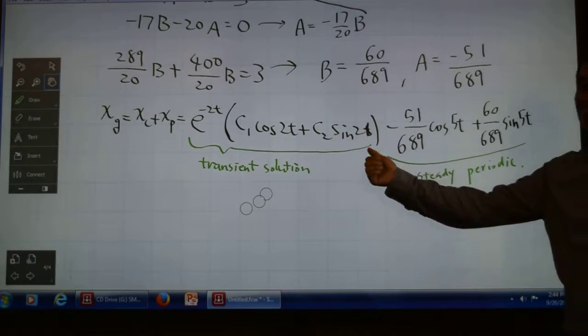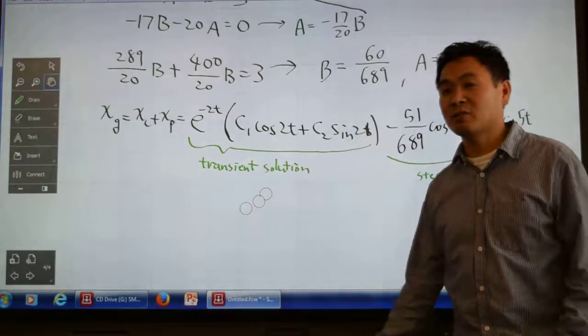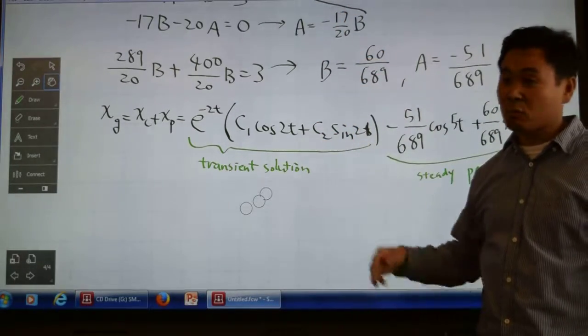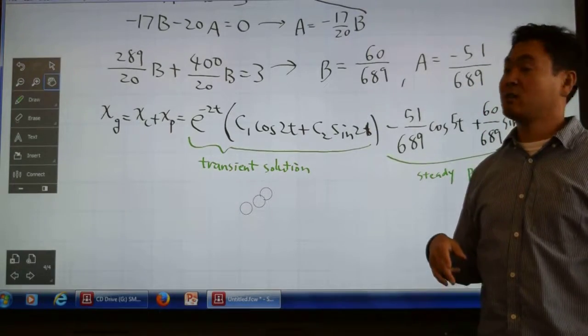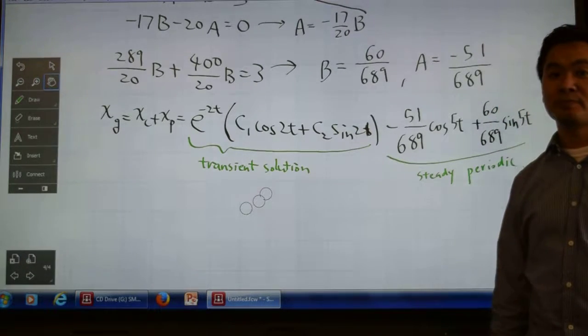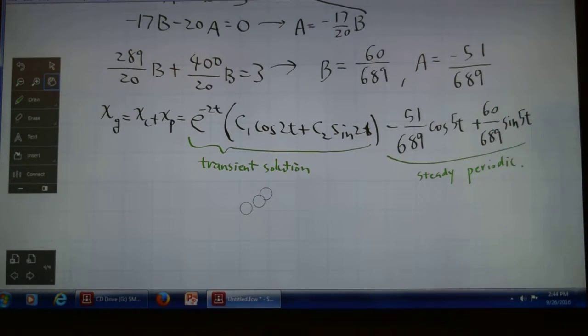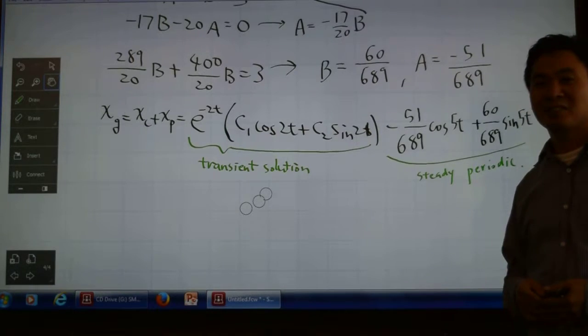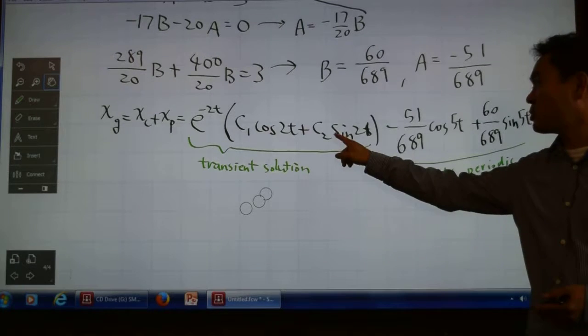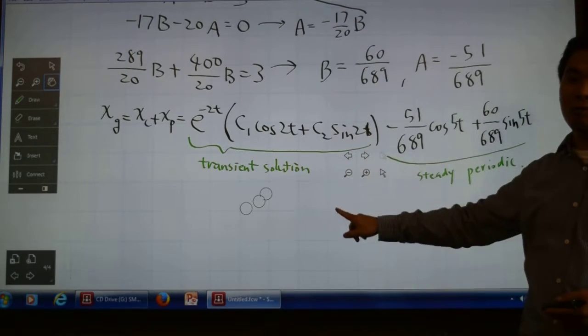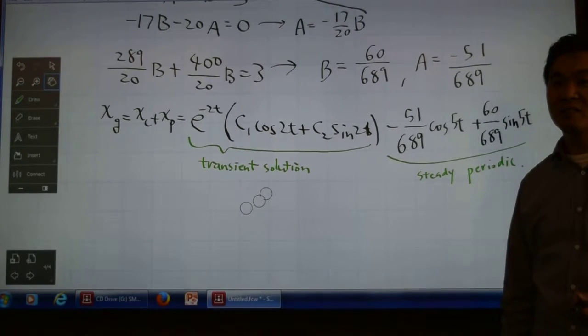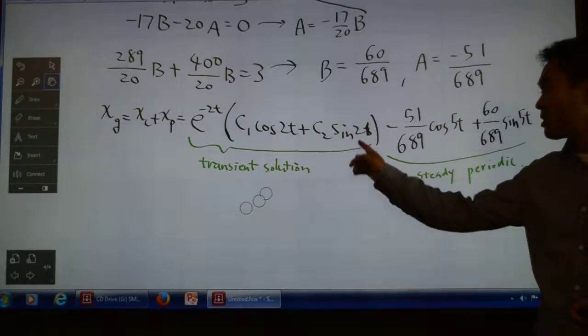Let me repeat: underdamped is when the characteristic equation gives you two complex numbers—the solution contains cosine and sine. Overdamped is when you have two distinct real numbers. Critically damped is when you have one single solution—a double root.